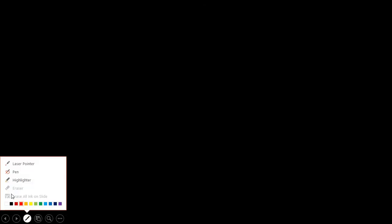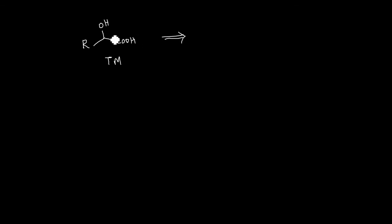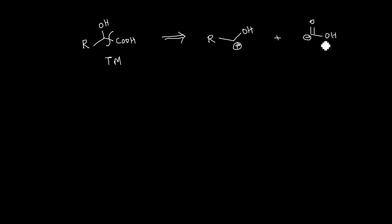Let us take another example. Consider a target molecule which is alpha hydroxy carboxylic acid. If you do a C-C bond cleavage here in retrosynthesis, generally you will get a positive charge on the carbon connected to OH, which is acceptable. And one more fragment — C double bond O, OH — where you are having a negative charge. But generally, carbonyl carbon should always have a positive charge; here you are getting a negative charge, which is opposite to the original functional group characteristic. This is called Umpolung nature.